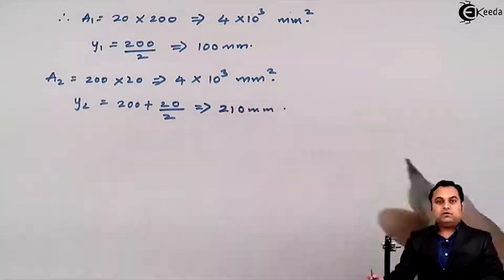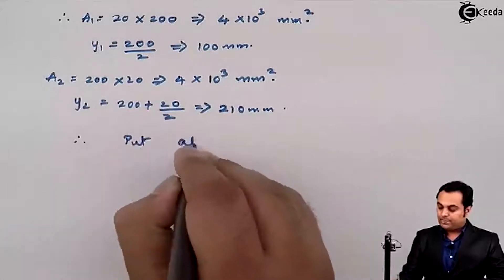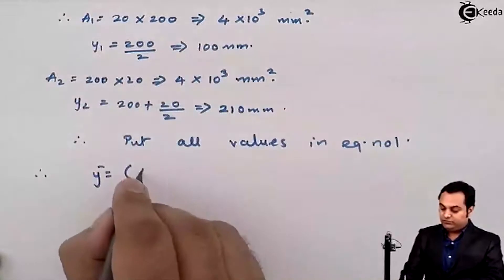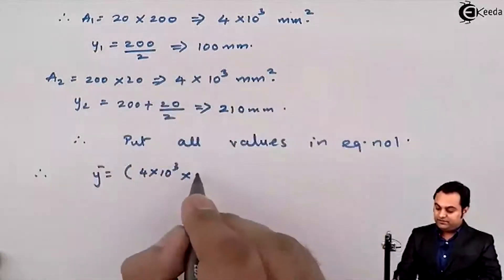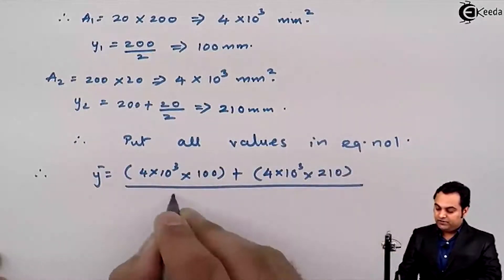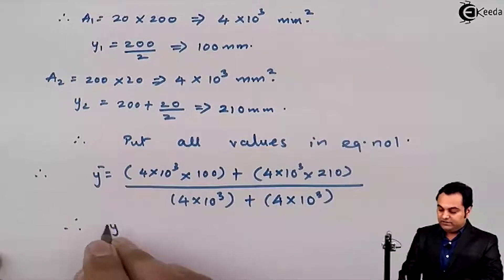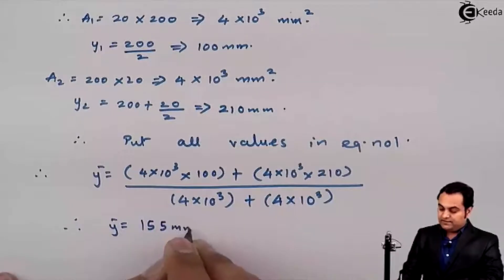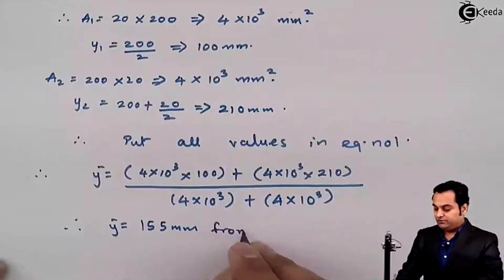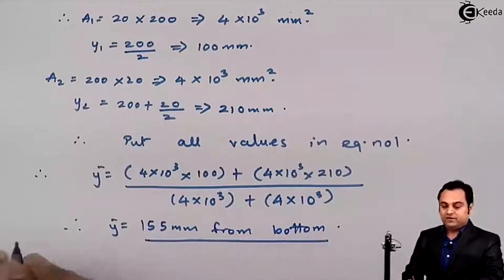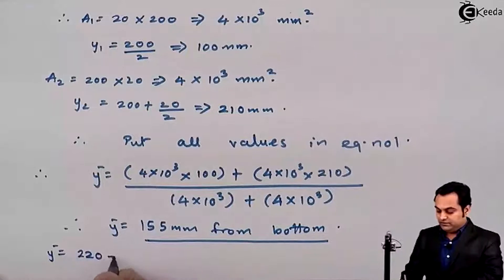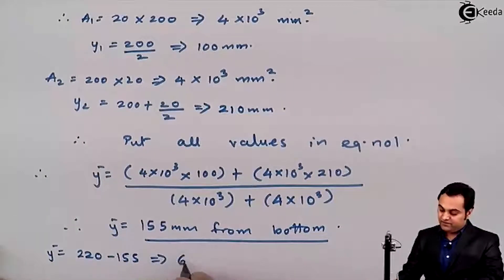Putting all values into equation number 1: y-bar = (4×10³ × 100 + 4×10³ × 210) / (4×10³ + 4×10³). This gives y-bar = 155 mm from the bottom. We can also find y-bar from the top: 220 − 155 = 65 mm from the top.